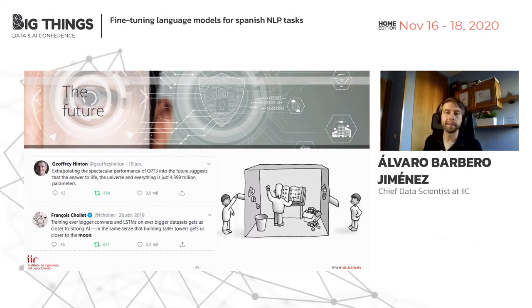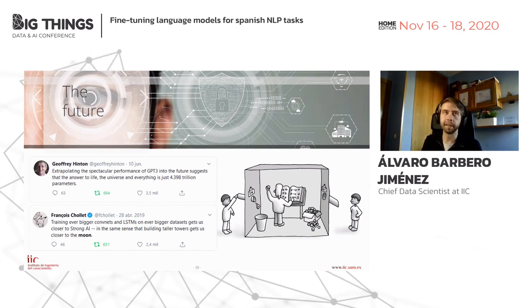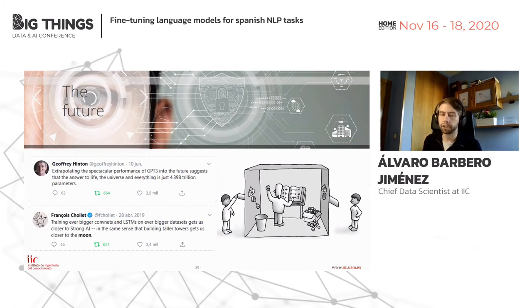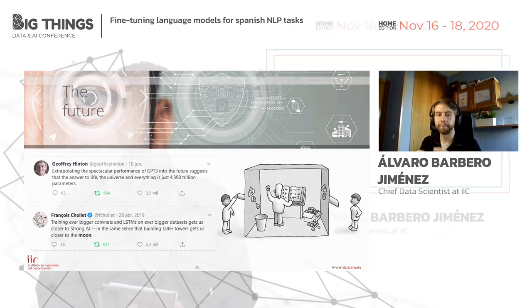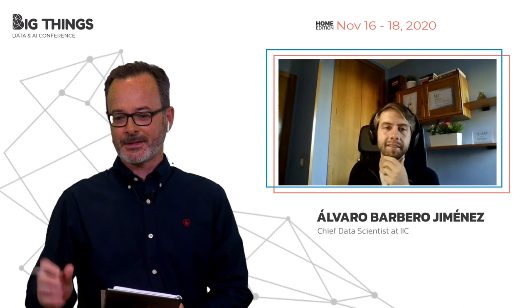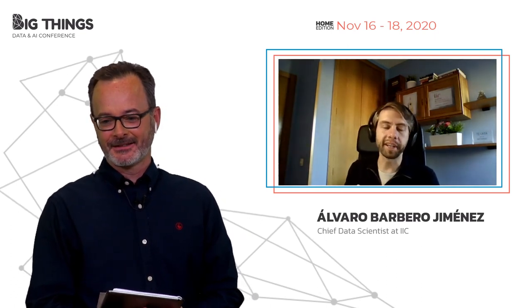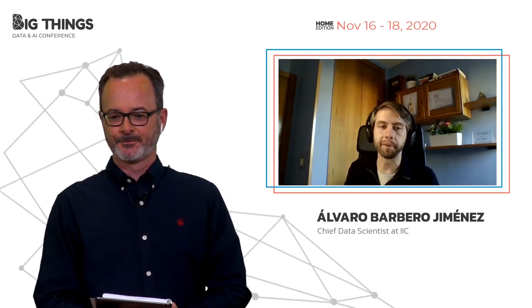These models are essentially giant correlation machines — they have no real grounding in what words actually mean. They don't know what a pen is in the physical world. They make beautiful resonances but won't give you strong AI. My key takeaway: these models won't take us to strong AI, but they will be more and more useful for practical problems.